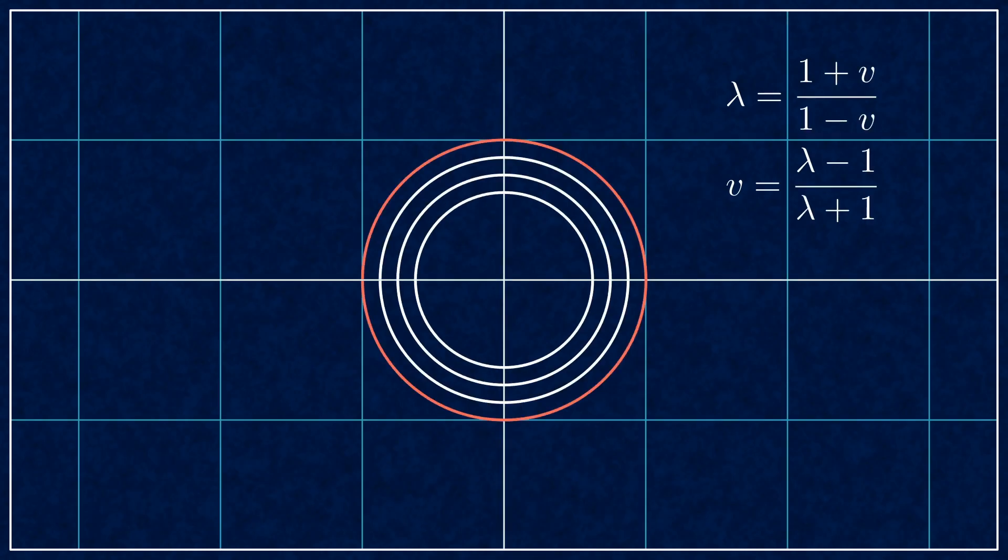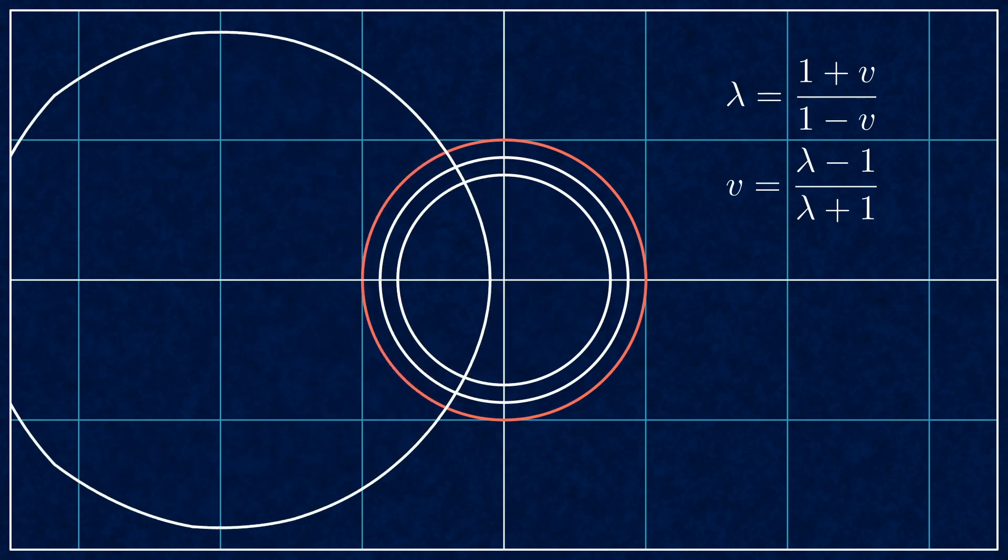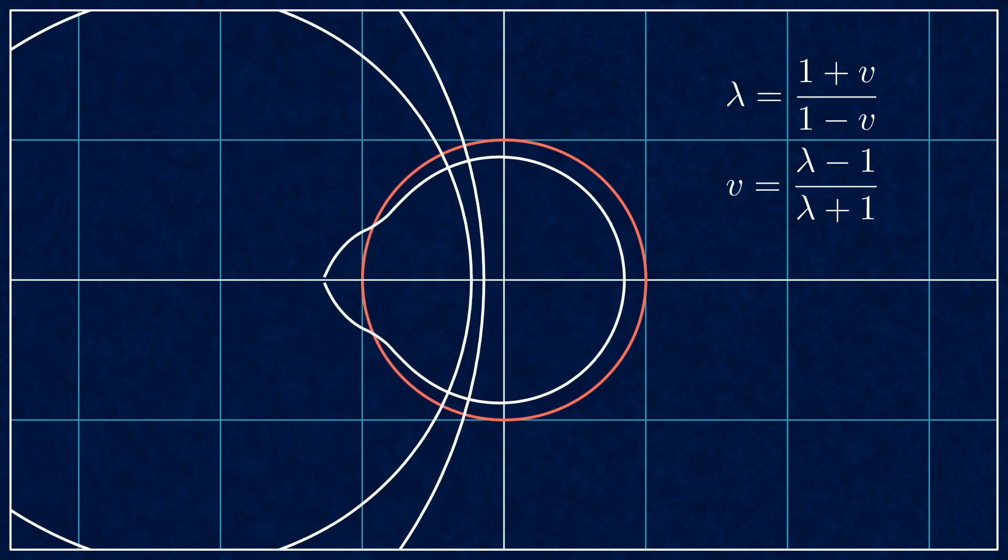You see, the bilinear transform applied to the unit circle gives the imaginary axis. Anything inside the unit circle is mapped to the left of the imaginary axis.